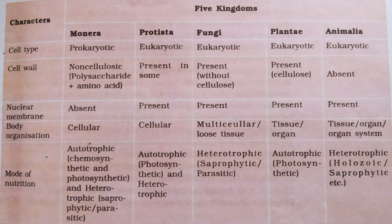The second kingdom is Kingdom Protista. Kingdom Protista includes eukaryotic forms. The cell type is eukaryotic and cell wall is present in some. The nuclear membrane is present and the body organization of Protista is cellular. Both autotrophic and heterotrophic modes of nutrition are shown by them.